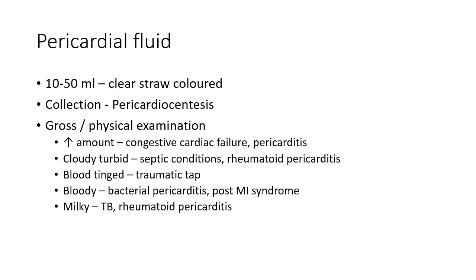Normally, 10 to 50 ml of pericardial fluid is present in the pericardial space; it is usually clear and straw-colored. The fluid is obtained by aspiration with a sterile needle under aseptic conditions — this procedure is called pericardiocentesis. On physical examination, color and clot formation are observed and specific gravity is determined. Increased amounts of pericardial fluid are indicative of congestive cardiac failure and pericarditis.